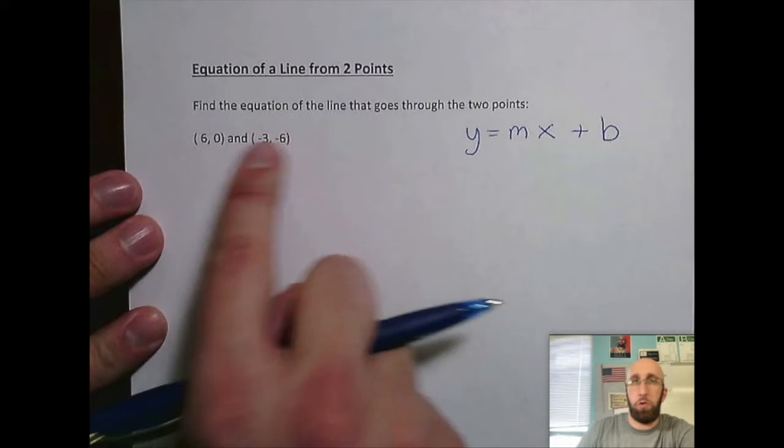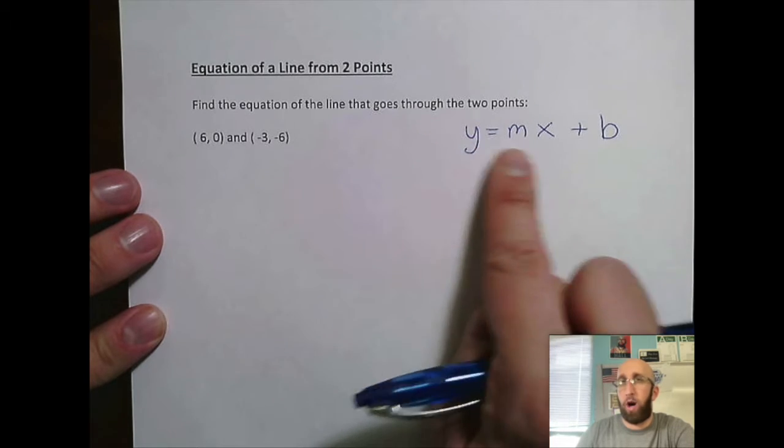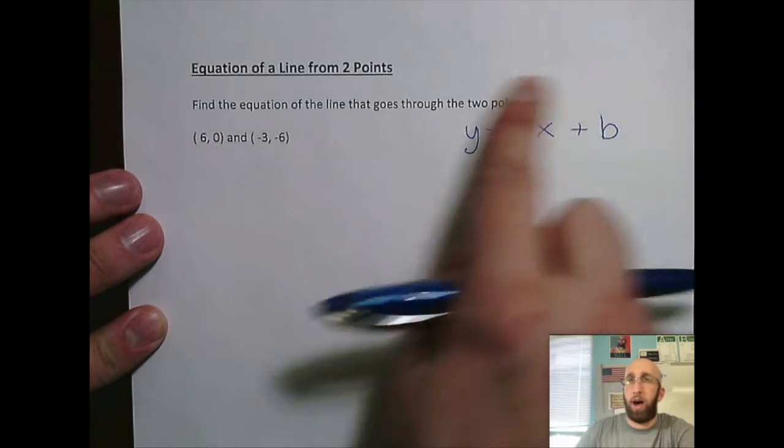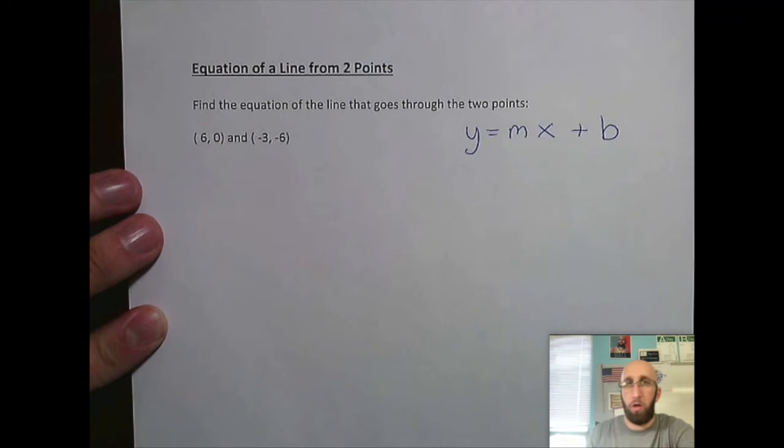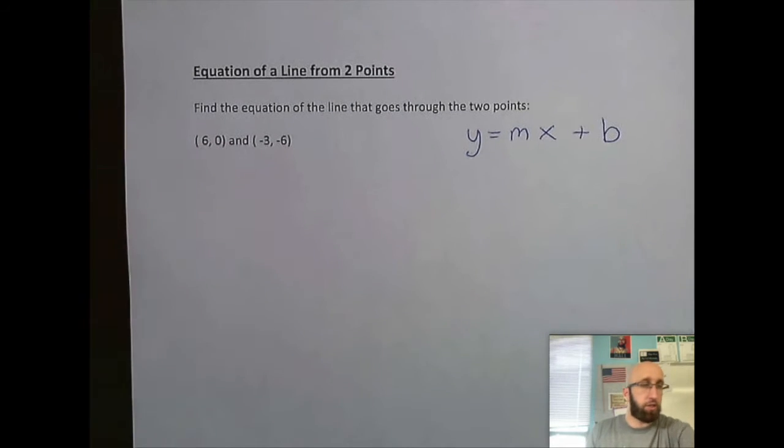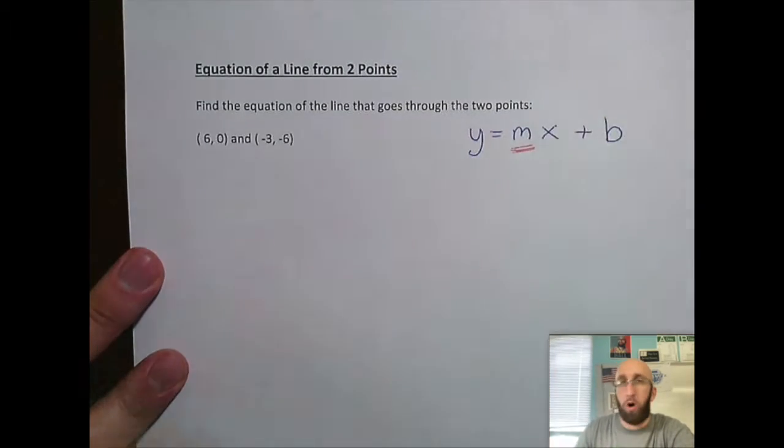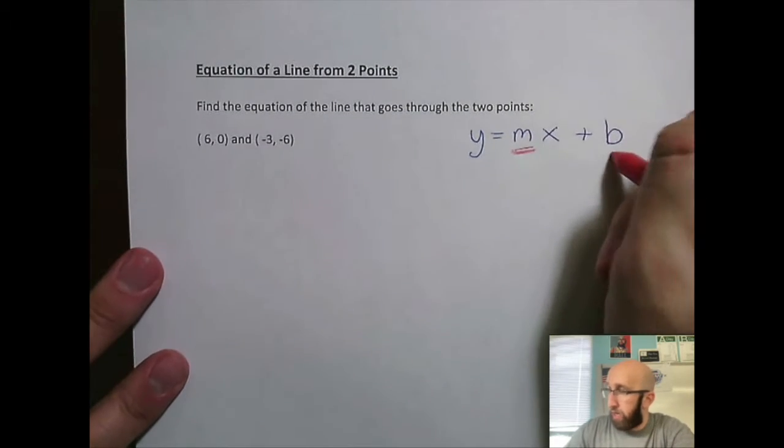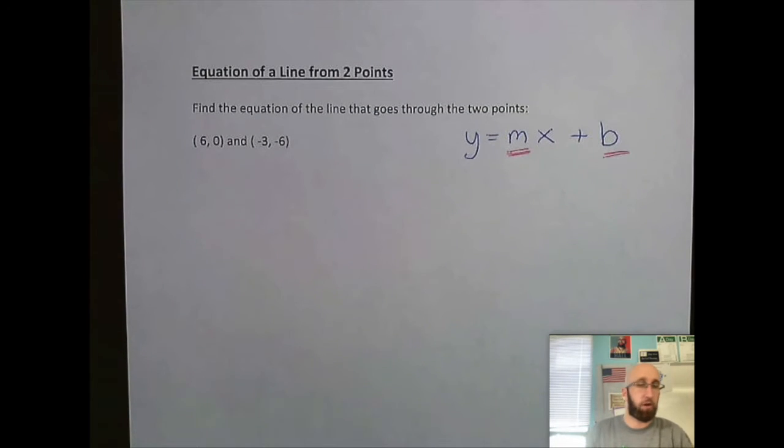So we're given two points. Our end goal is to get an equation of a line, y equals mx plus b. I'm going to find the equation of the line that will go through those two points. So our goal is we have to figure out what in the world our slope is, and we have to figure out our y-intercept.